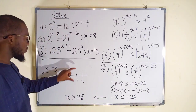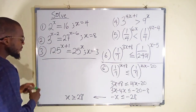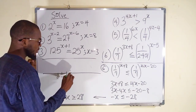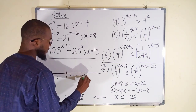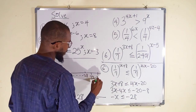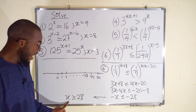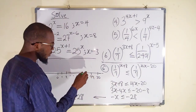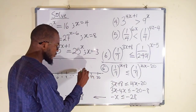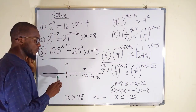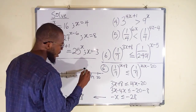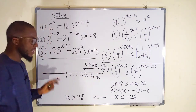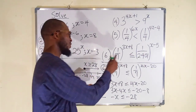We can represent this on a number line: 0, 1, 2, dot dot dot, up to 28, 29, 30, and so on. x is either equal to 28 or any value greater than 28. Because x can equal 28, we draw a solid circle at 28 with an arrow pointing right. x is greater than or equal to 28, and this is the solution to the last problem.